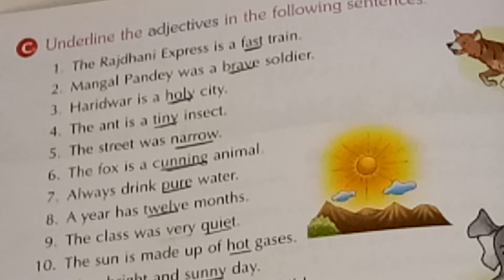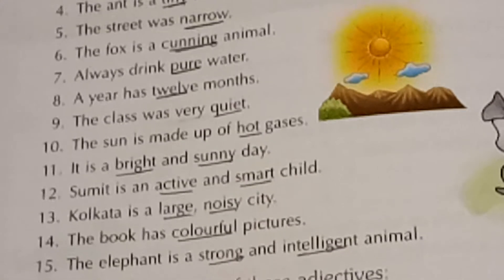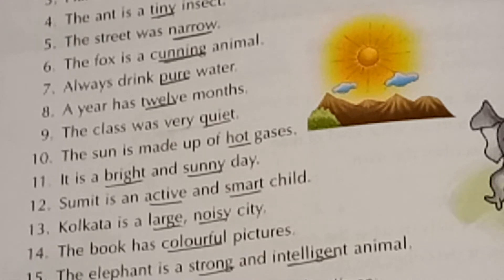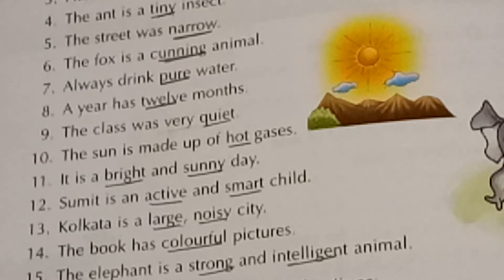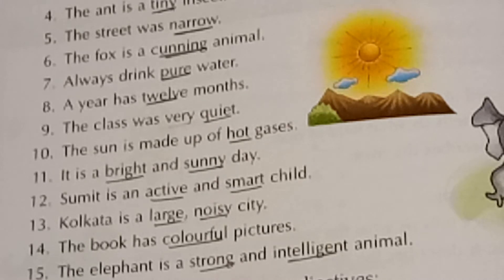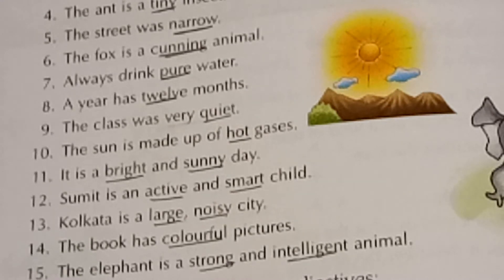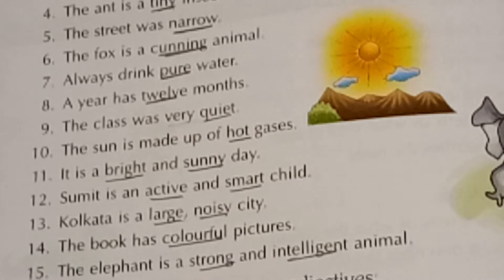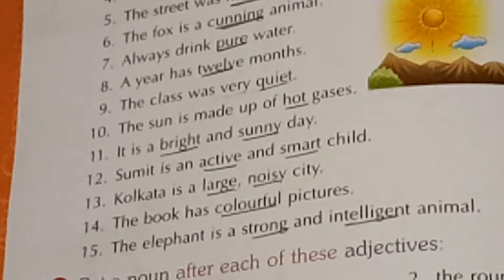Always drink pure water — what kind of water should be drunk? That is 'pure', so the adjective is 'pure'. A year has 12 months — a year has how many months? 12 months. So '12' is describing the months and '12' is the adjective. The class was very quiet — the noun is 'class' and 'quiet' is the adjective. Children, we are not underlining 'very' because 'very' is an adverb which you are going to learn afterwards. 'Quiet' is only the adjective.